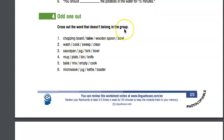Next one: mug, plate, bin, knife. We drink tea from a mug, we use a plate to eat our dinner, we put rubbish in the bin, and we use a knife to butter our bread or toast. So bin is the odd one out - everything else is something you can put in a drawer or a cupboard, things we use to eat or drink with.